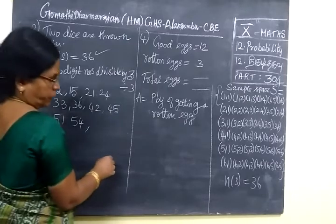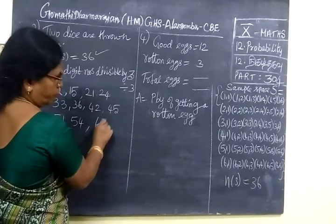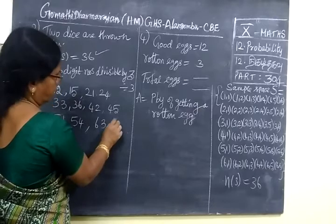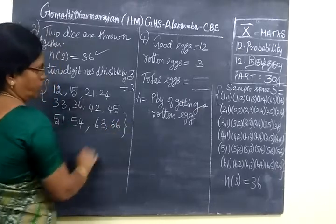Then the last row 63, then 66. So after this it is over.